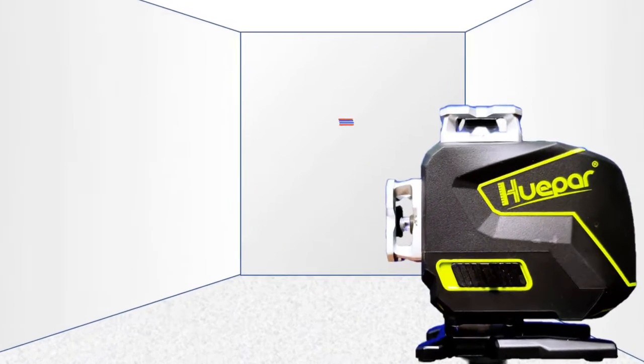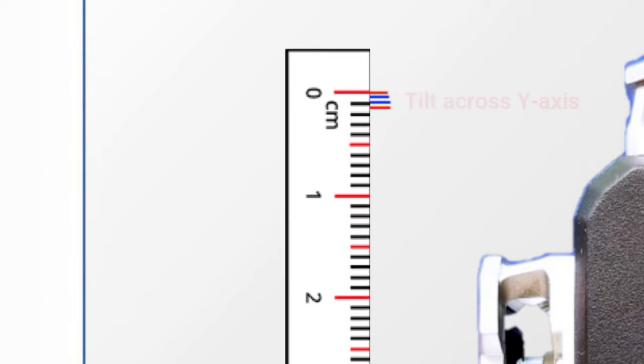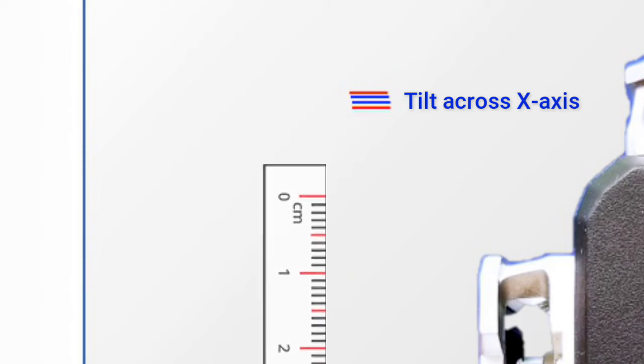Now measure the distance between the red marks. This will tell us the amount of total tilt across the y-axis. Now measure the distance between the blue marks. This will tell us the amount of tilt across the x-axis.